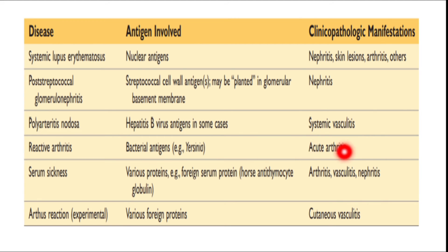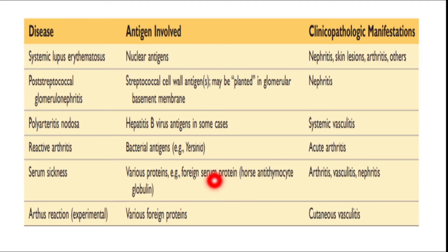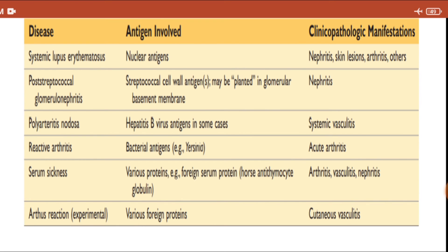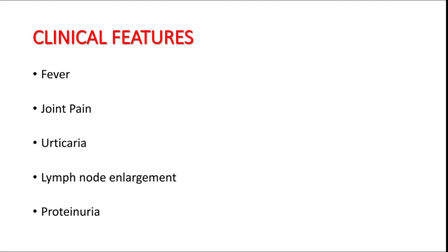Fifth, serum sickness — antibody forms against foreign serum protein injected into the body, such as antithymocyte globulin; the patient will have immune complex formation in many organs, causing systemic type 3 hypersensitivity. Most reactions are localized — if foreign proteins are injected into the skin, the patient develops antibody against it and will have immune complex deposition in the blood vessels of the skin. These are the six examples of type 3 hypersensitivity reaction.